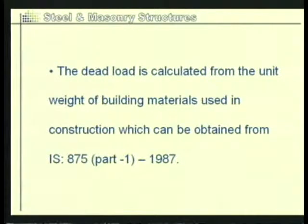Since the depth of the section may not be known, we assume the depth and calculate volume as depth × width × length. This volume is multiplied by the unit weight of the construction material — if we use RCC, we take the unit weight of RCC; if steel, we take the unit weight of steel. The unit weights are obtained from the standard code IS 875 Part 1.